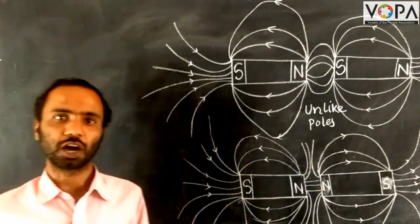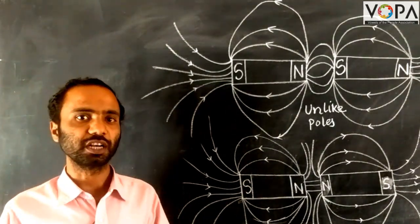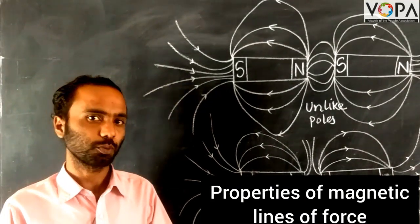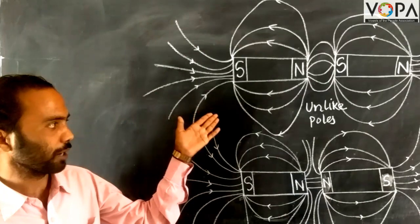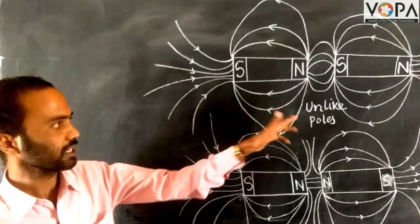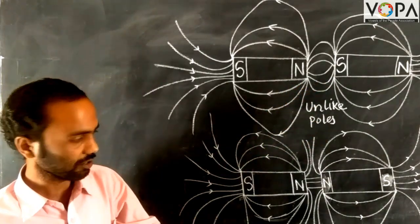Hi dear students, now in this video we will learn about the properties of magnetic lines of force. Look at the blackboard. Here you are seeing two diagrams: one is the unlike poles of the magnet and the second one is the like poles of the magnet.